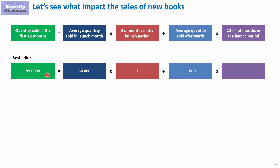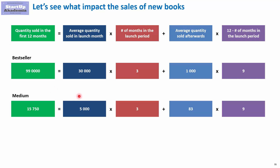If the book is not a bestseller but, for example, a medium book, then we have much lower quantities: 5,000 per month during the launch period instead of 30,000, and 83 items per month afterwards instead of 1,000. Therefore, sales will be around 16,000 instead of 99,000. So we must account for the book type, the duration of the launch period, and the average quantity sold both during and outside the launch period.